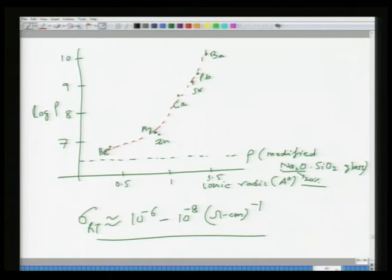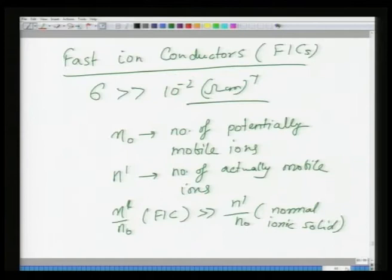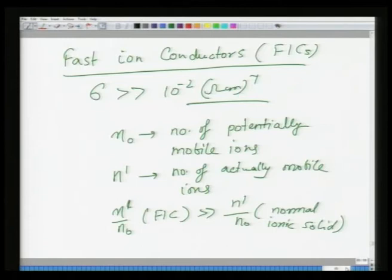As the size of the ion increases, the resistivity also goes up — bigger ions act as blockers, blocking ionic movement. In the same category you have fast ion conductors (FICs), which are highly conducting oxides or other ceramic materials with conductivities higher than 10^−2 per ohm centimeter. In these materials, the number of actually mobile ions is a significant proportion of the number of potentially mobile ions, which is very small in a normal ionic solid.